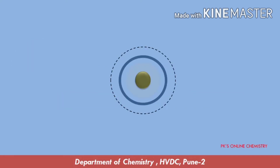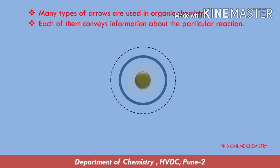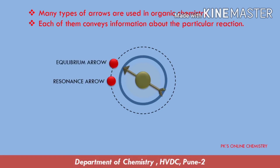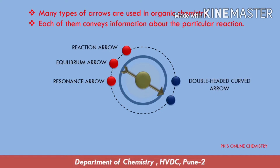Various types of arrows are used in chemistry, and they convey information about the particular reaction. These arrows are: resonance arrow, equilibrium arrow, reaction arrow, double-headed curved arrow, and single-headed curved arrow. Some of these arrows are also used during retrosynthesis and in stereochemistry.